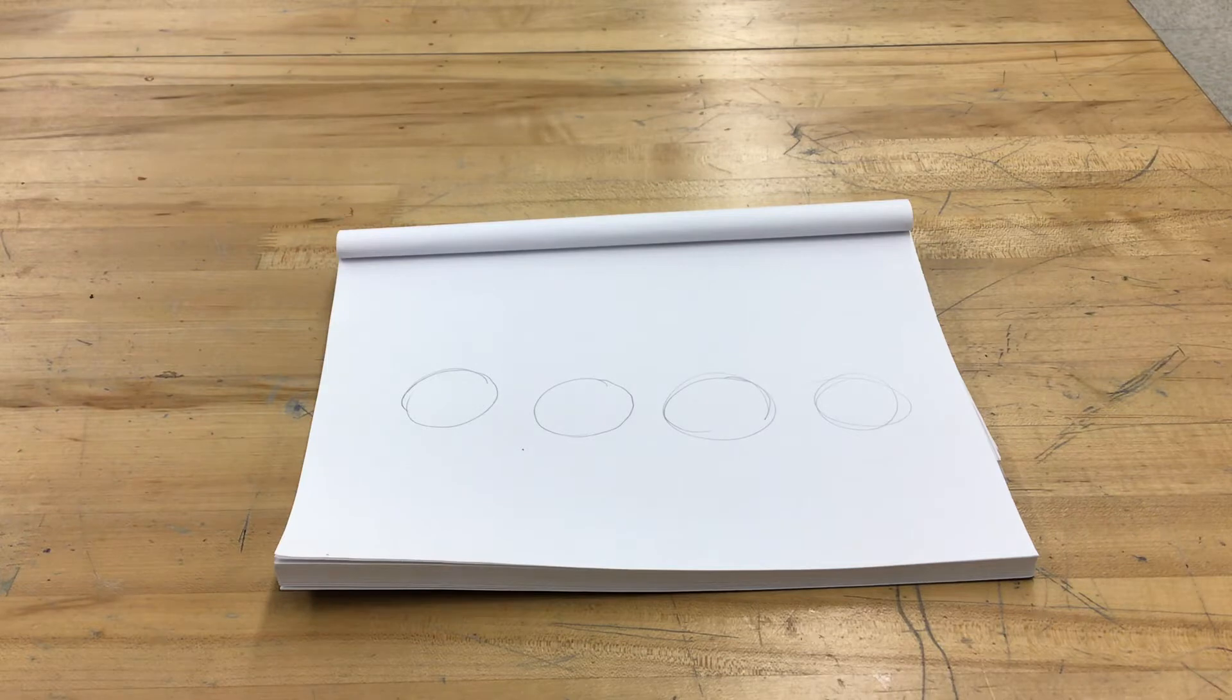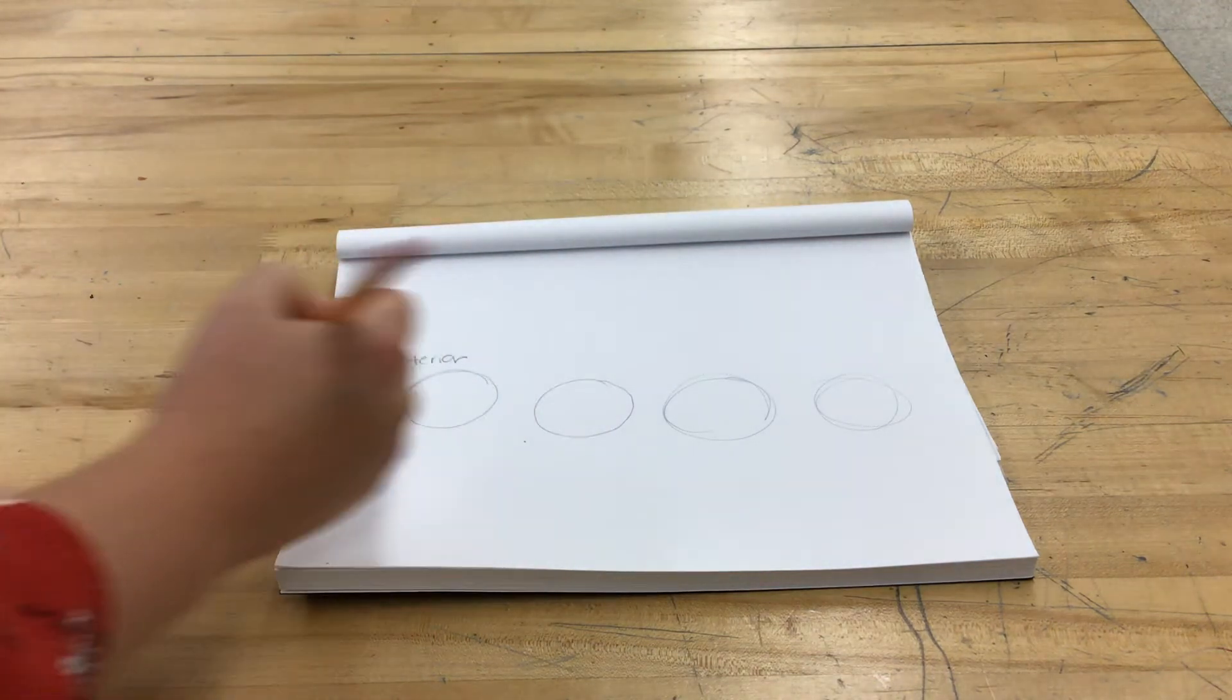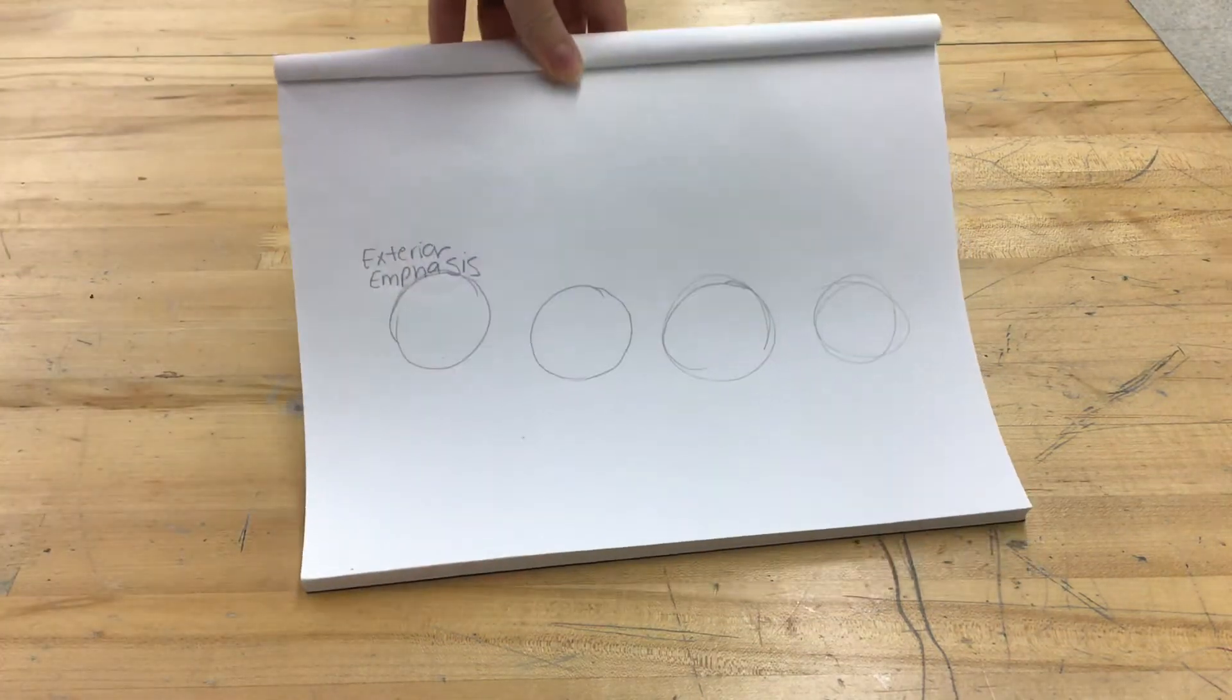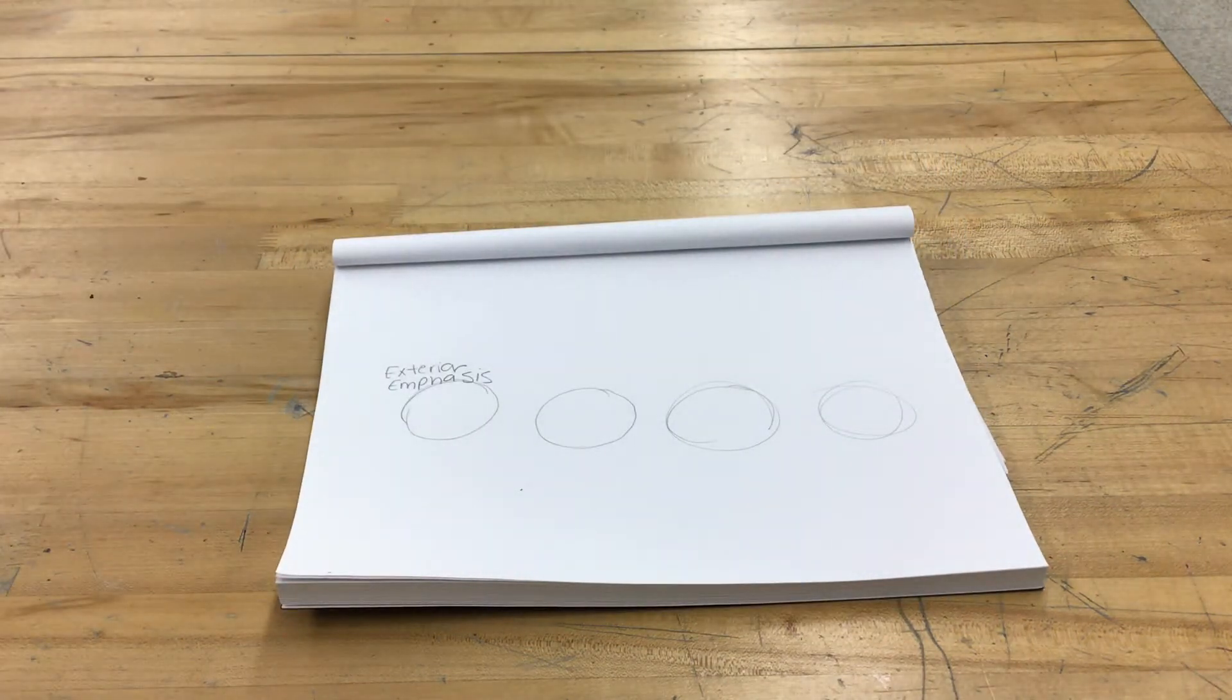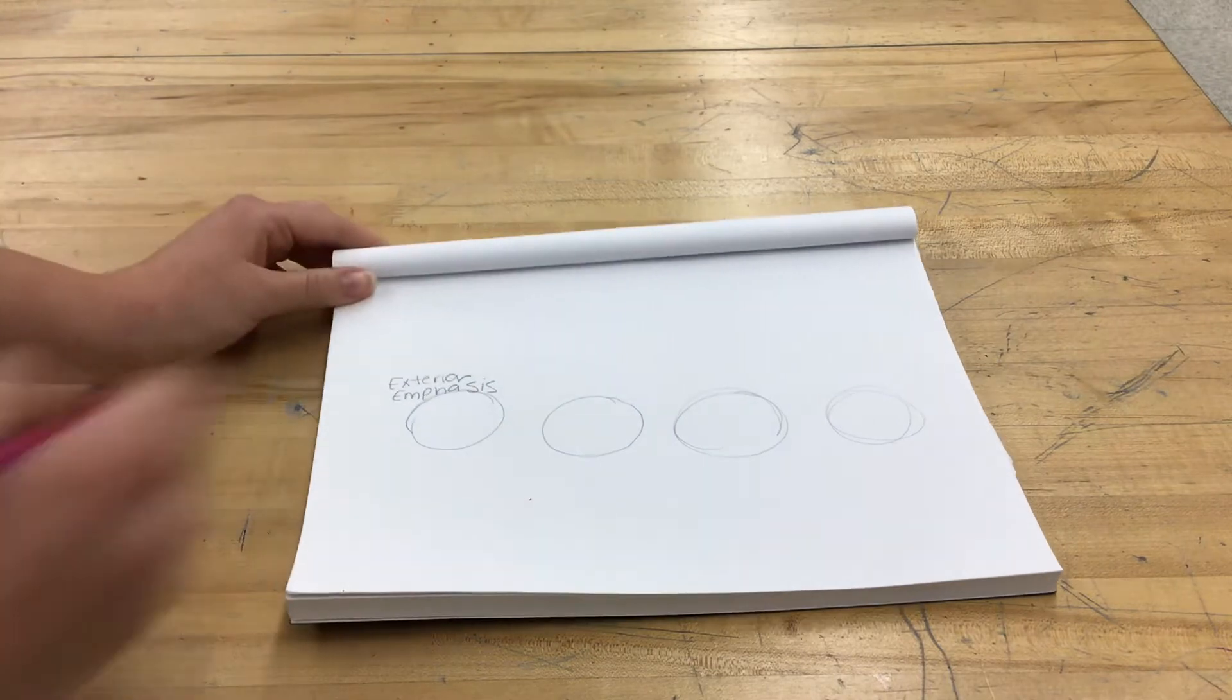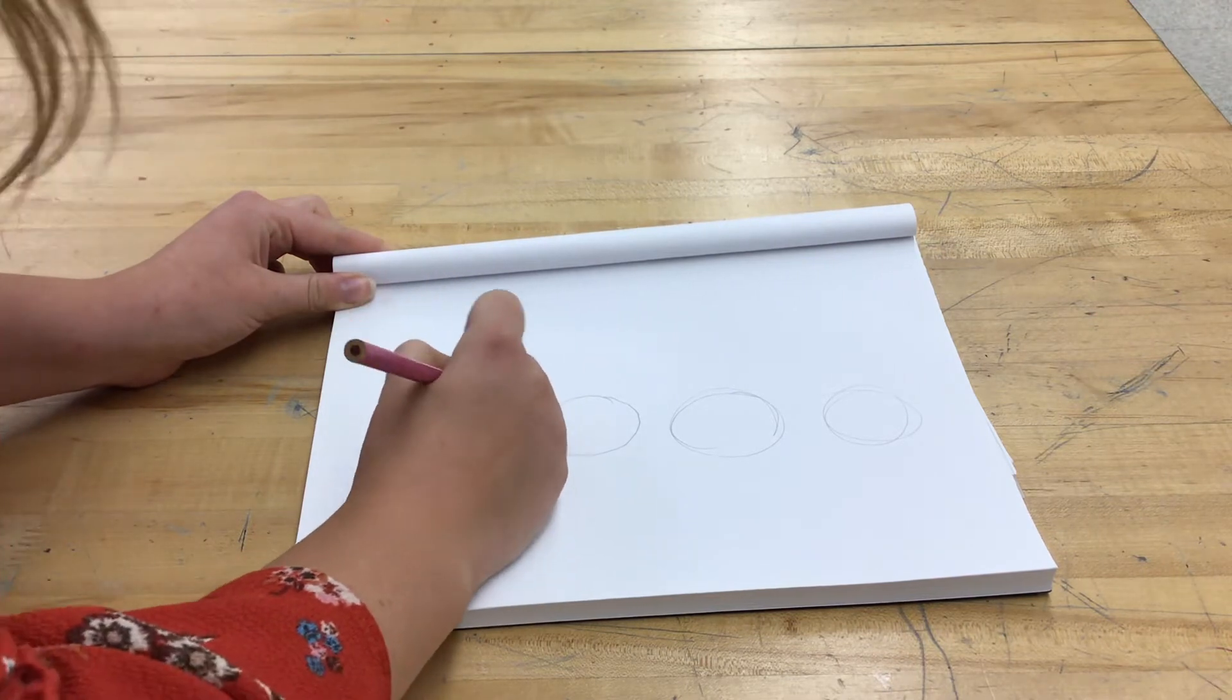The first coloring technique I want you to label your circle is exterior emphasis. The way that we get an exterior emphasis is we are going to make the outline of our object darker than the inside of our object. So I am going to make my circle, the outline darker than the inside.